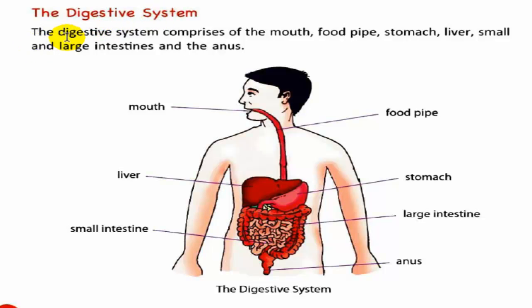The digestive system comprises of the mouth, food pipe, stomach, liver, small and large intestines, and anus.